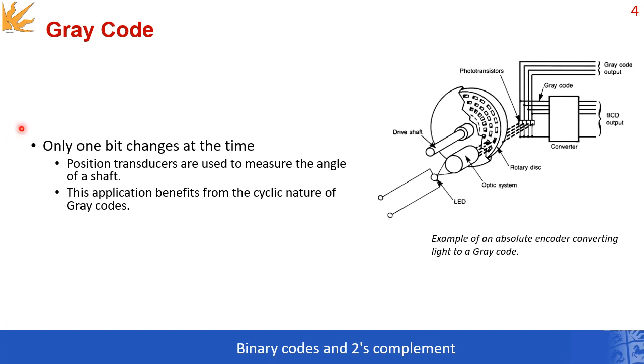As we said, what is characteristic about gray codes is that only one bit changes at a time. Let's take a look again at this obsolete encoder. As you can see, position transducers are used to measure the angle of a shaft.